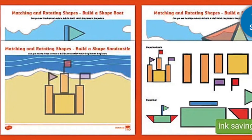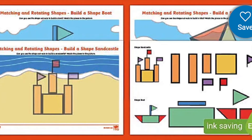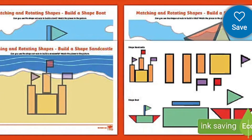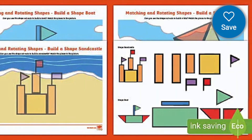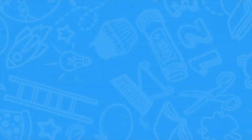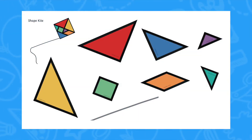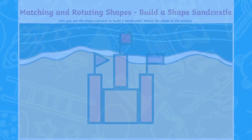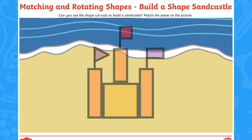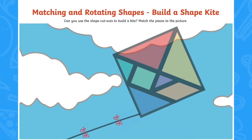For a perfect follow-up activity, why not print out this matching and rotating shapes activity? Children can practise their fine motor and cutting skills by cutting out the shapes, then matching and rotating them to complete the pictures.